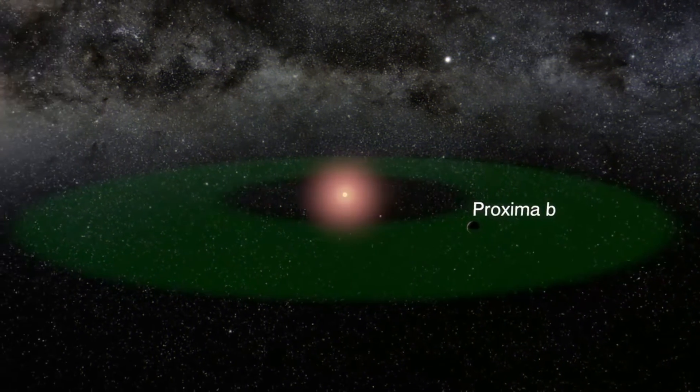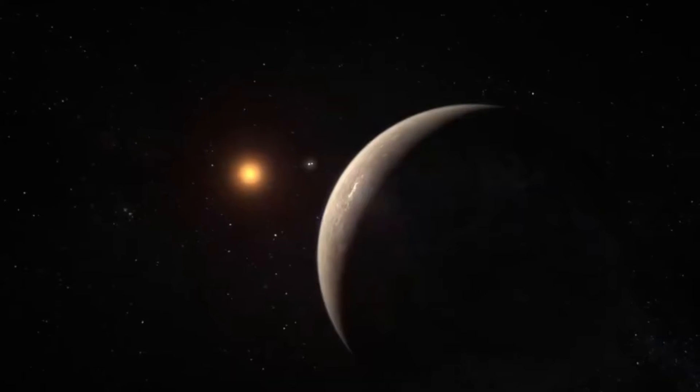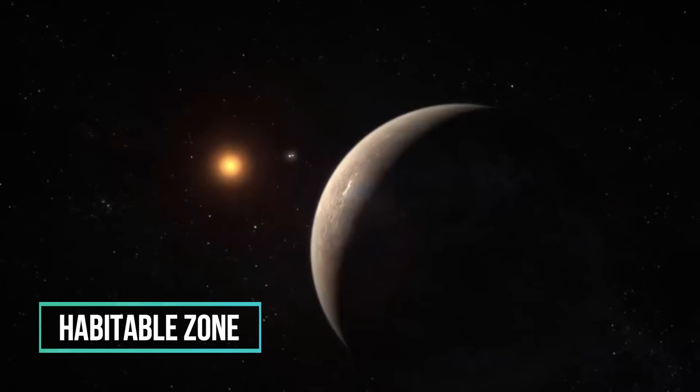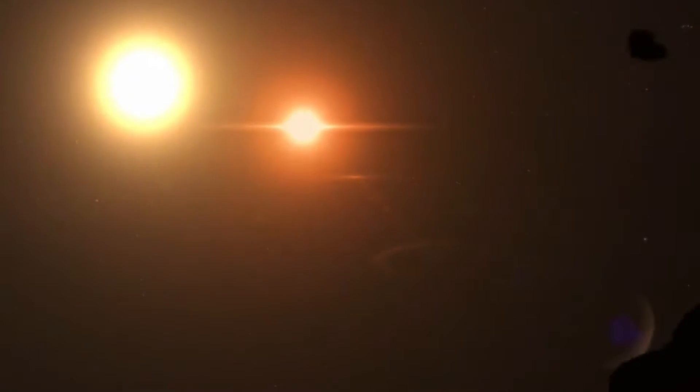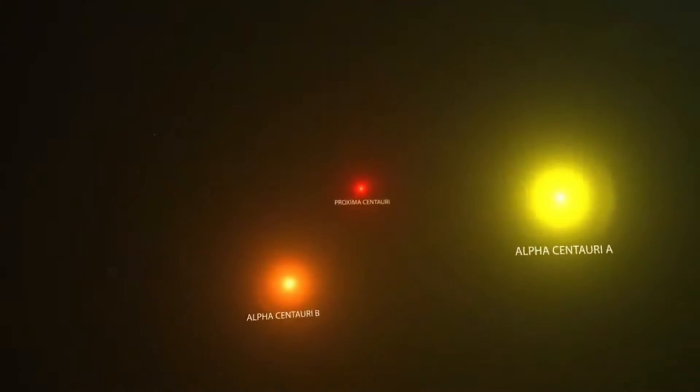Proxima Centauri b is an extrasolar planet near the red dwarf star Proxima Centauri. It is in the habitable zone of Proxima Centauri, the star closest to the Sun and part of the Alpha Centauri triple star system.